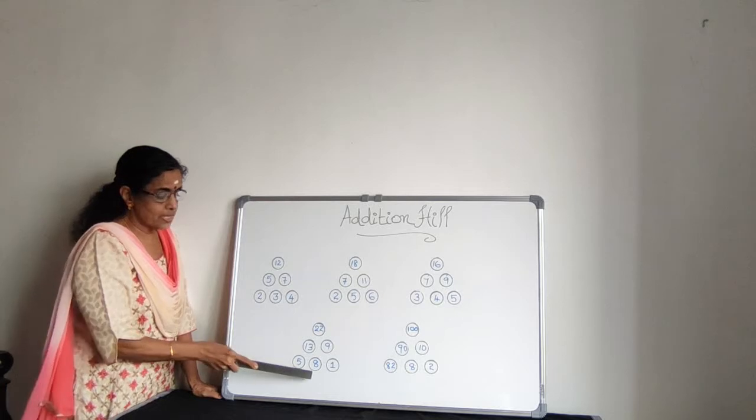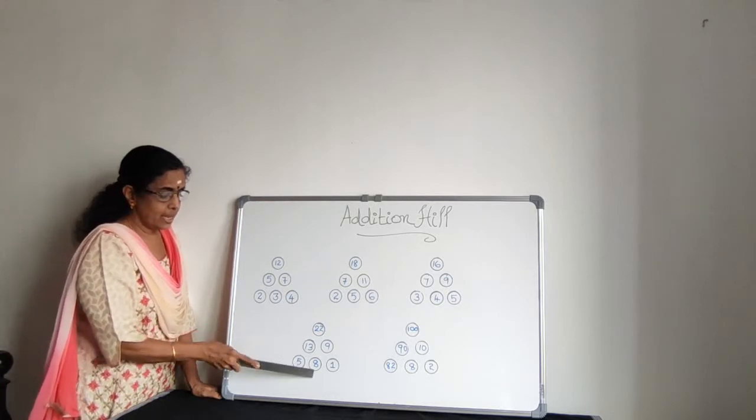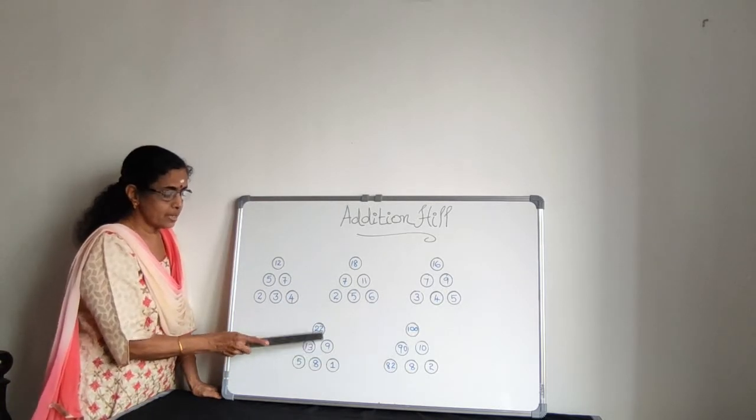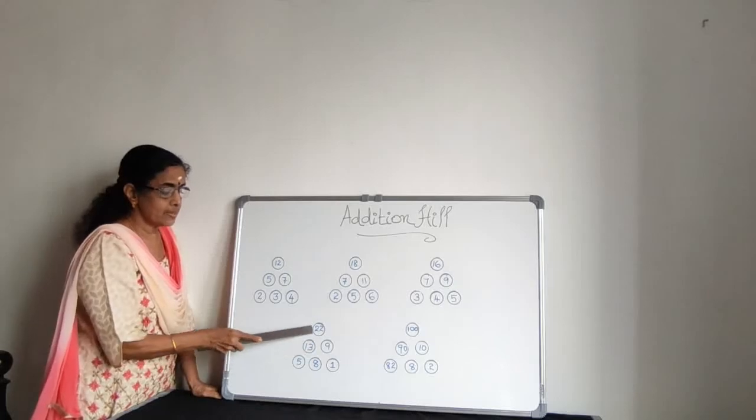The next one. 5 plus 8 makes 13. 8 plus 1 gives 9. 13 plus 9 gives 22.